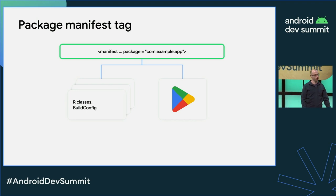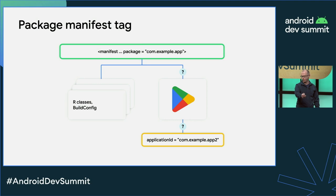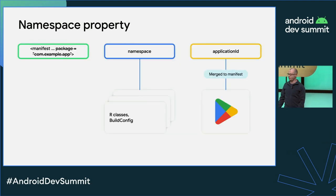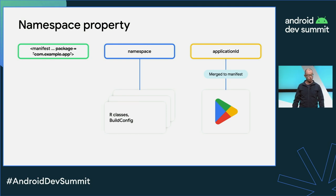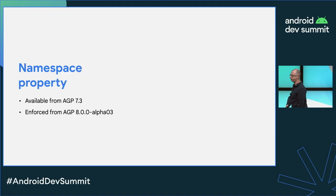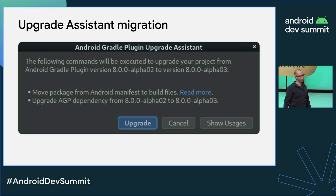Previously, the package attribute was used both for setting the application ID and R classes, unnecessarily coupling two mostly unrelated concepts. The application ID could also be set in the app's build.gradle, creating confusion about the source of truth. By introducing the namespace property, we cleanly separate the application ID from the R classes namespace. The namespace property is available from AGP 7.3 and enforced from AGP 8 alpha 3. The update assistant will help you migrate from the package attribute in the manifest to the namespace entry in build.gradle.